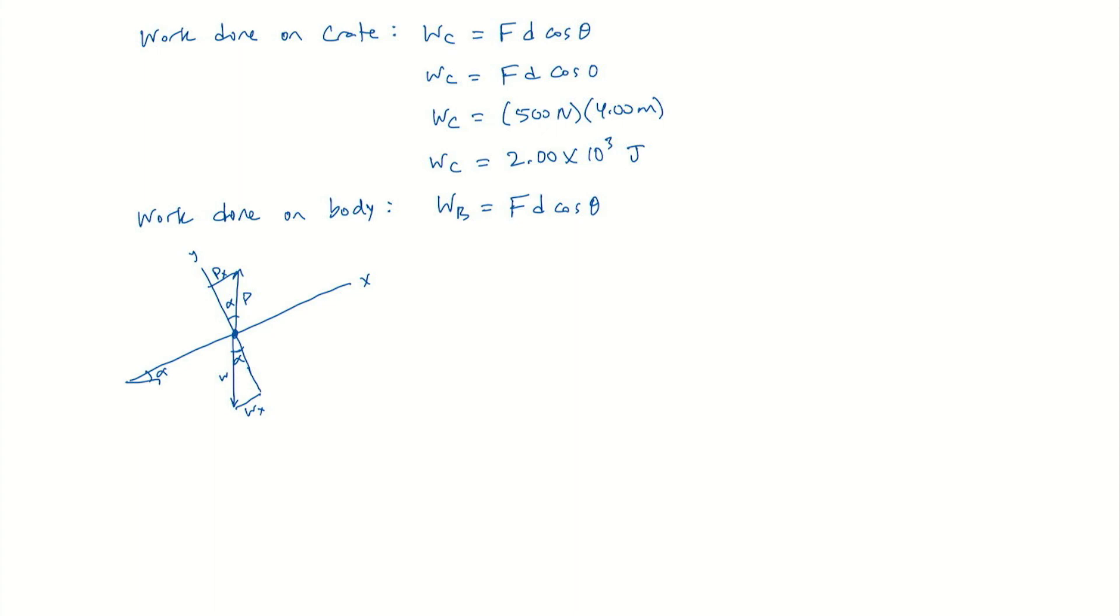So now, when we sum our forces in the X direction, they will add up to zero because the acceleration is zero because the velocity is constant. And so we have P sub X up the ramp minus W sub X down the ramp, that's equal to zero. So the force on the body PX is equal to the X component of weight.